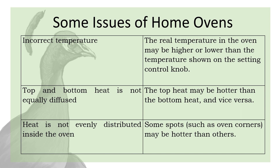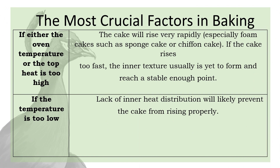Let's look at the most crucial factors in baking. If either the oven temperature or top heat is too high, the cake will rise very rapidly — especially foam cakes such as sponge cake or chiffon cake. If the cake rises too fast, the inner texture is usually yet to form and reach a stable enough point. If the temperature is too low, lack of inner heat distribution will likely prevent the cake from rising properly.